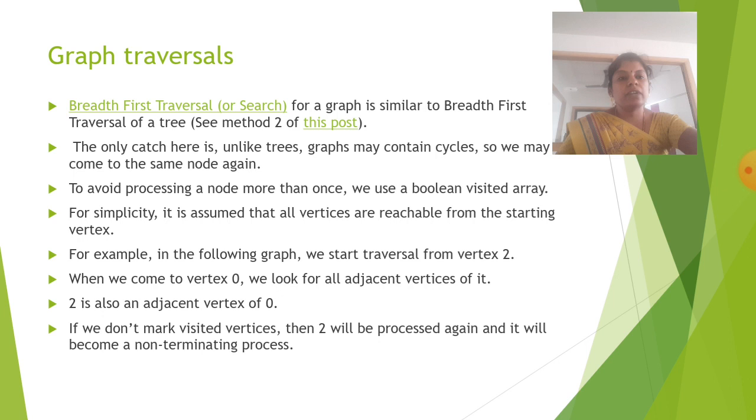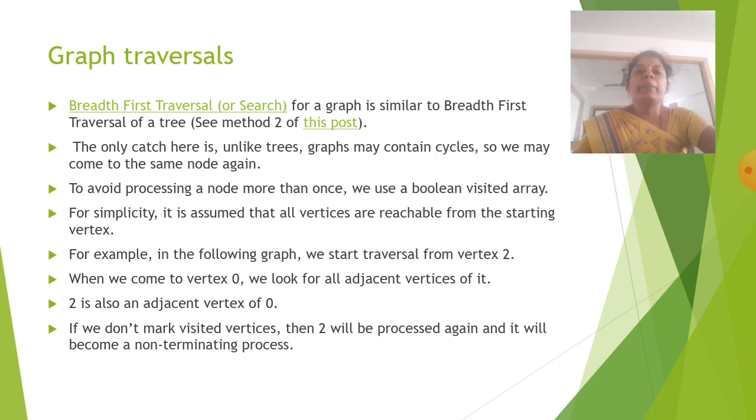Next is graph traversal. Breadth first traversal for a graph is similar to breadth first traversal of a tree. The only catch here is unlike trees, graphs may contain cycles so we may come to the same node again. To avoid processing a node more than once, we use a boolean visited array.